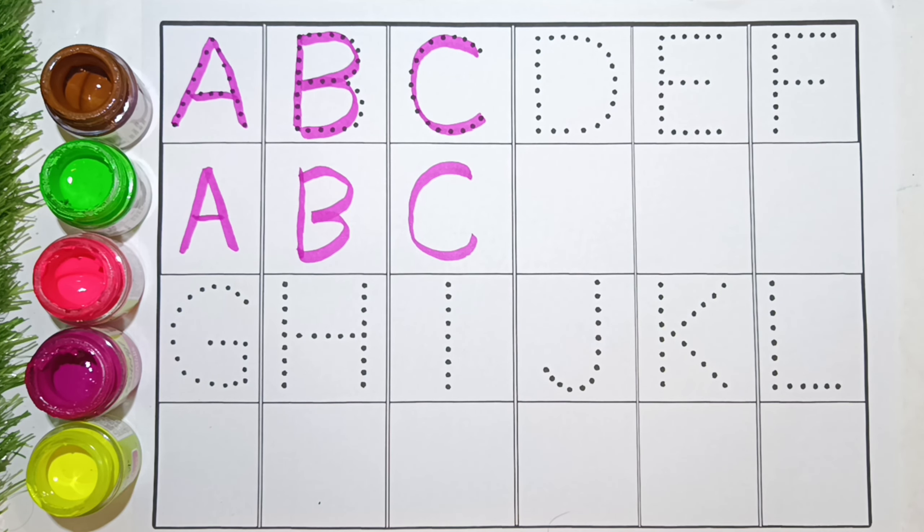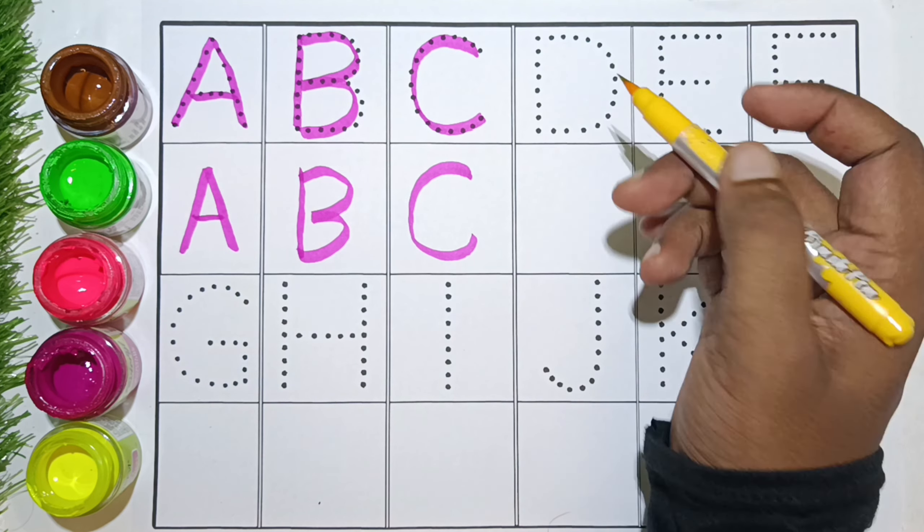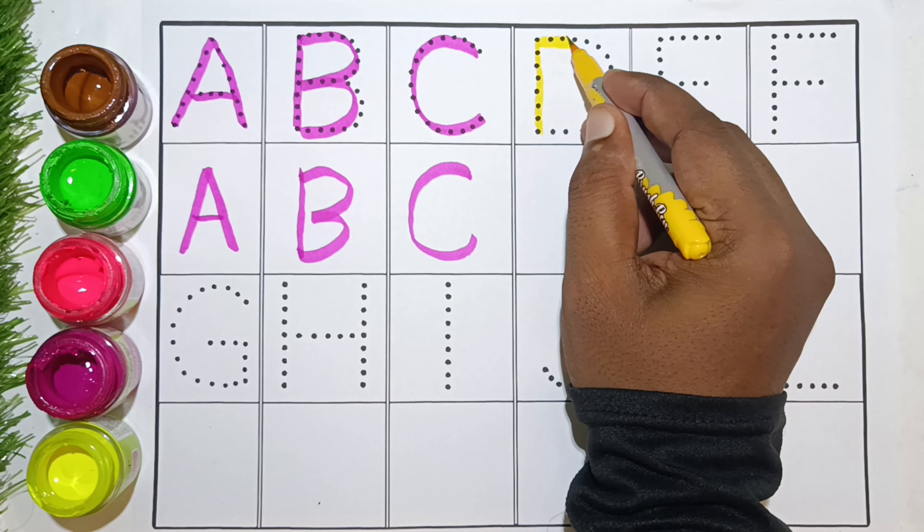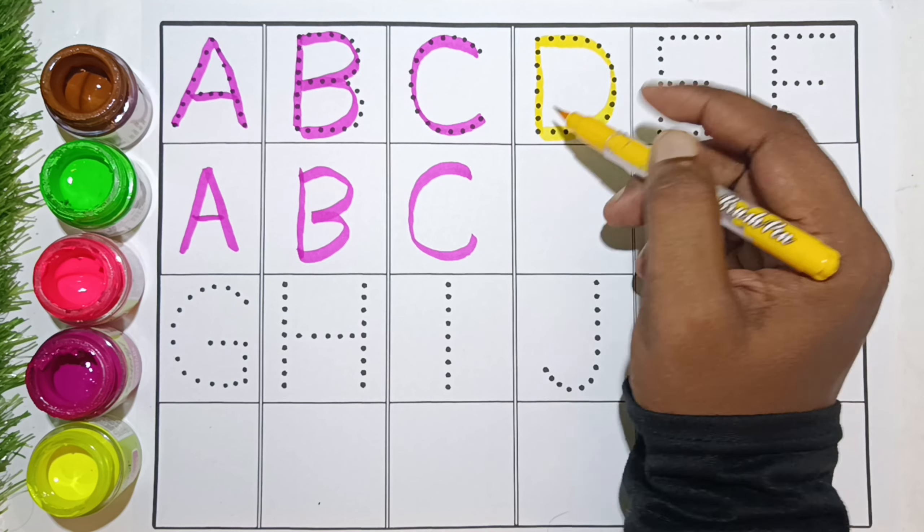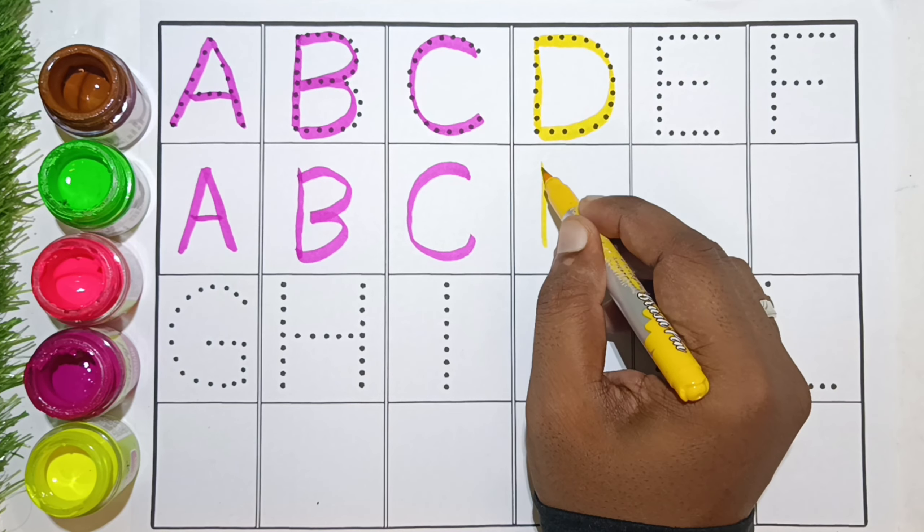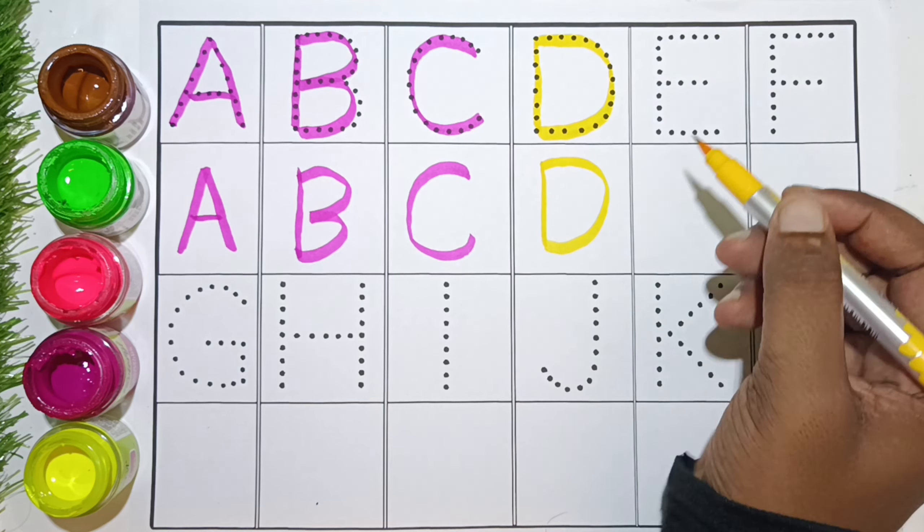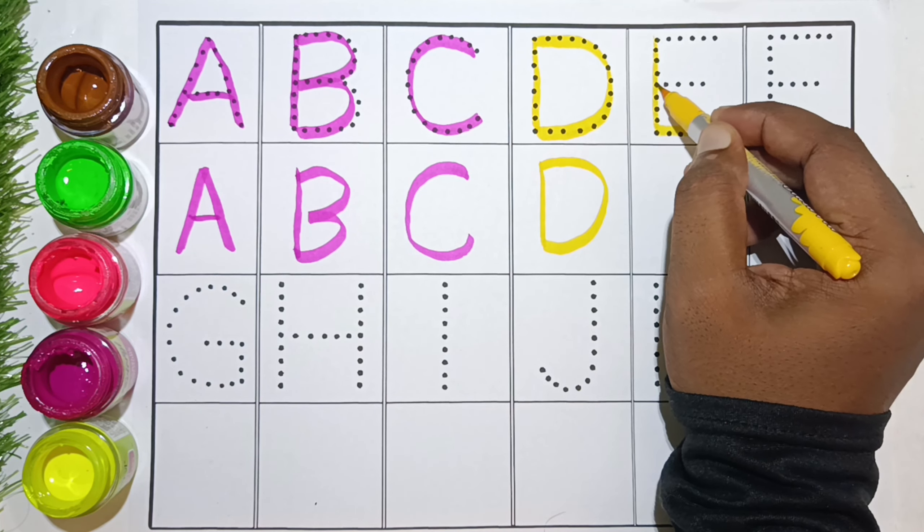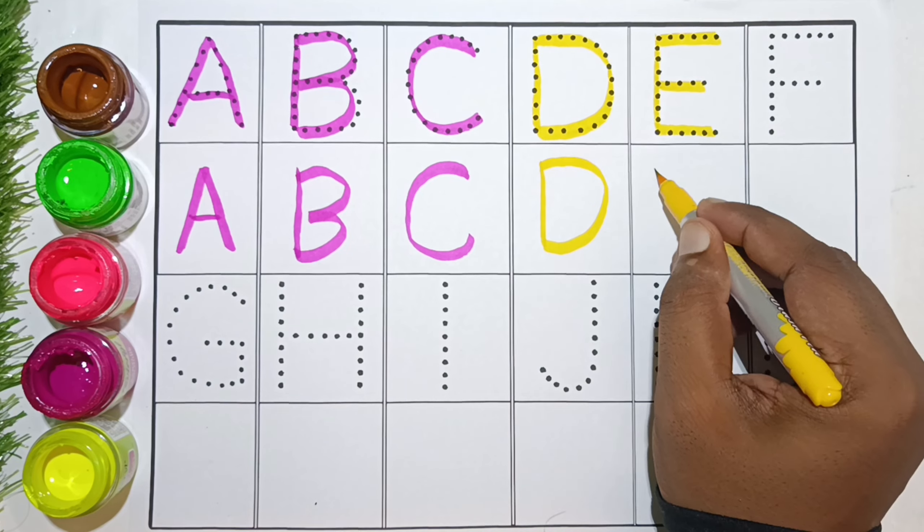Now we will use our yellow color. D for dog, E for elephant, F for fish.